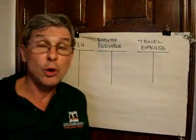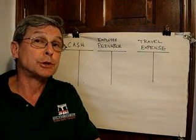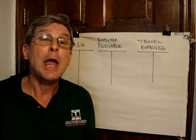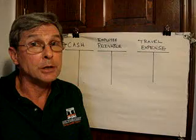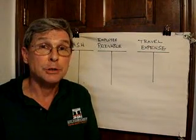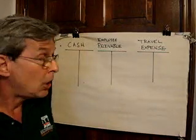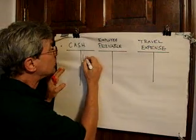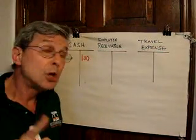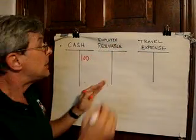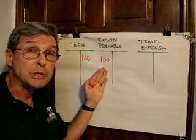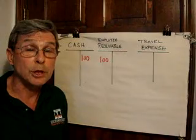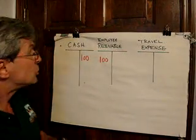Let's say I have an employee of my company that I want to send on a training course. That employee is going to incur travel expenses, so my company is going to give her a $100 travel advance so she can use it to pay her travel expenses. I'm paying out $100, so that's going to be a credit to cash of $100, and I'm going to debit $100 to an account called employee receivable.